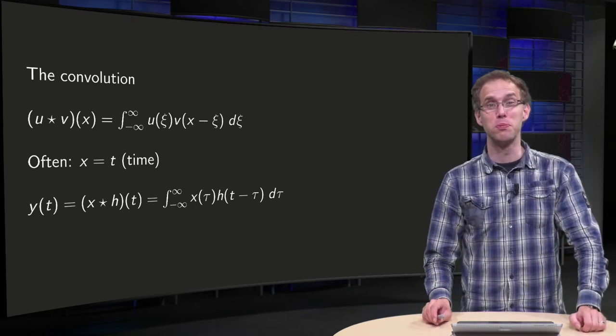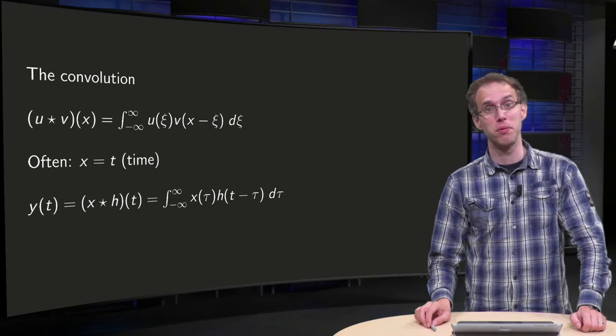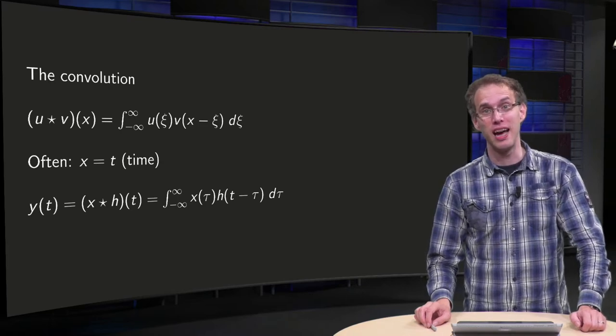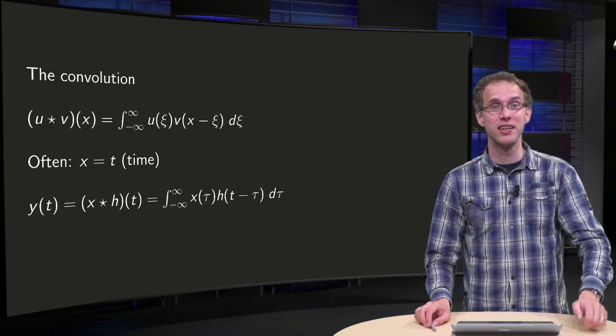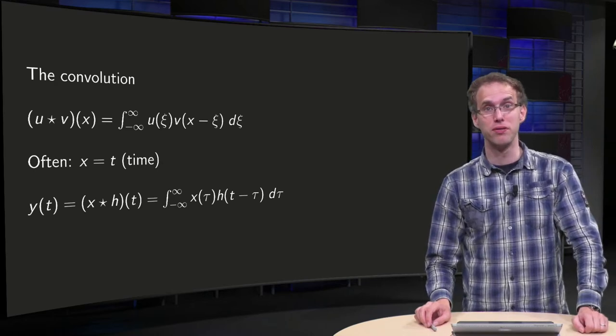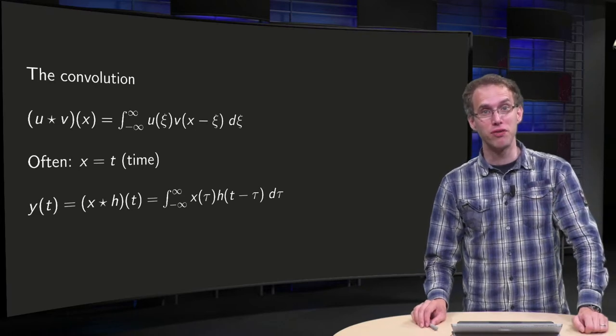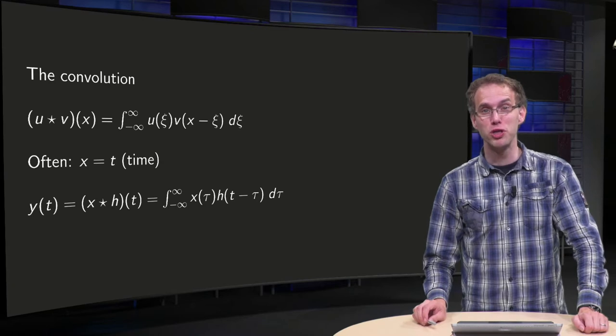A convolution integral looks pretty scary. They are however very important for us, for example in systems and signals for LTIs, linear time invariant systems, or in probability for adding random variables. And also when we are studying Fourier transforms we will encounter those convolutions a lot.